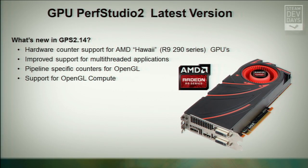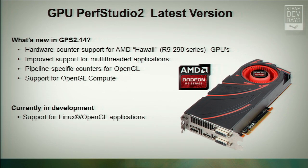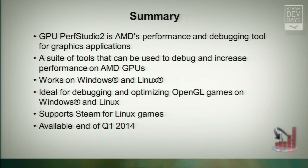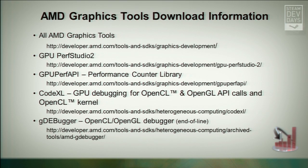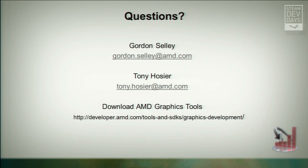To summarize: Perf Studio works on Linux, supports Steam for Linux games, and is available at the end of Q1 2014. We'd like to thank Rich Geldreich, Jason Mitchell, and all at Valve who used and supported the project; Dan Ginsberg, Peter Lorm and Graham Sellers for all their OpenGL support; and especially Valve for inviting us to attend and present here today. There's some download information for our tools available.